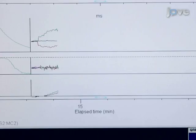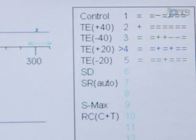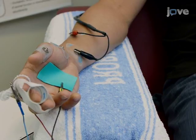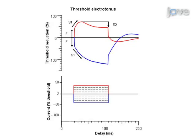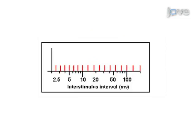Assess threshold electrotonous using 100 ms subthreshold polarizing currents. Record the change in threshold current required to maintain target response amplitude following both depolarization and hyperpolarization. Threshold electrotonous provides an assessment of internodal conductances and membrane potential, with responses in the hyperpolarizing direction at the end of the polarizing pulse strongly associated with membrane potential. Next, assess the recovery cycle using a paired pulse paradigm, with an initial supra-maximal conditioning stimulus followed at different intervals by a test stimulus, ranging from 2.5 ms to 200 ms.